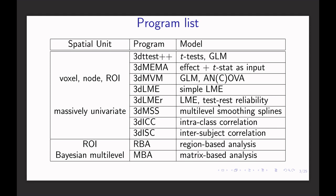The next program is 3D ISC. You can use this program to handle inter-subject correlation. That's basically for a naturalistic dataset, where you calculate the correlation between each subject pair and then perform population-level analysis. All those programs are, as the name indicates, for three-dimensional datasets, performing a massively univariate approach.